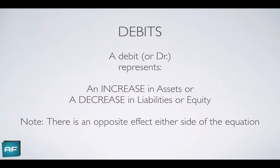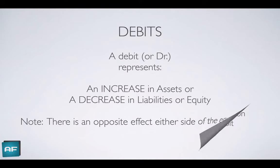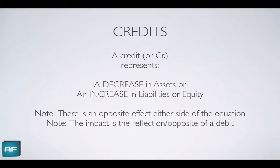A debit represents an increase in an asset, or correspondingly a decrease in liabilities or equity. Note the inverse effect on either side of the equation — don't get confused thinking a debit always means an increase or always means a decrease. A credit is the opposite: a credit represents a decrease in assets, or an increase in liabilities or equity. The impact of a credit is the exact opposite of a debit — they're a mirror image.